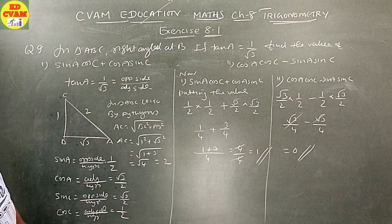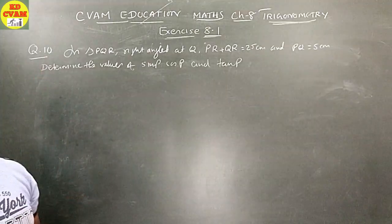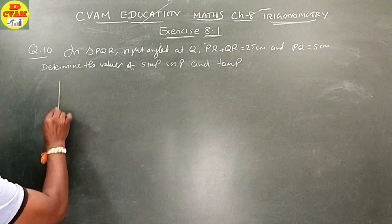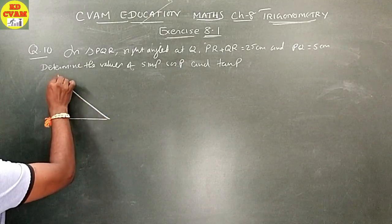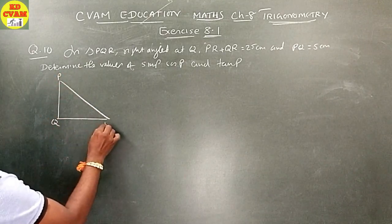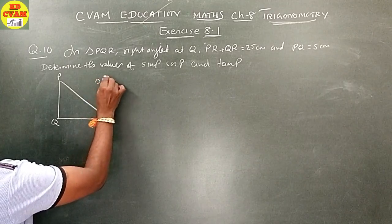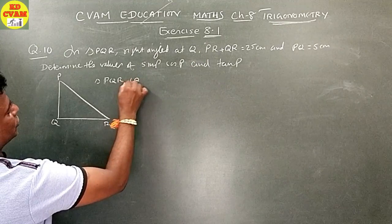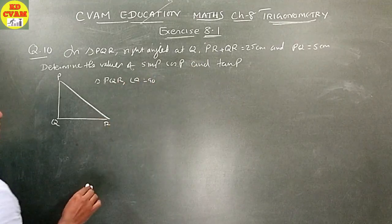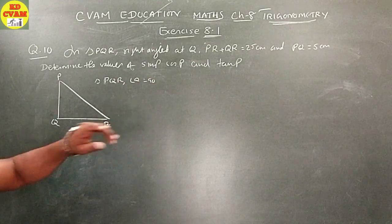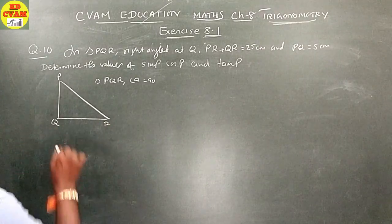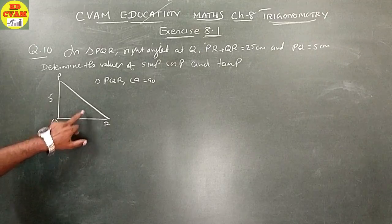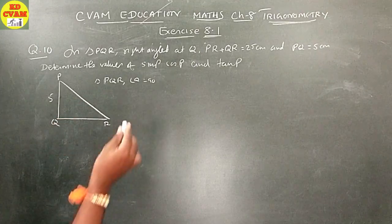I hope you understood. Let's go to the next sum. Question number 10: in triangle PQR, right angle at Q. PQ is equal to 5 cm. PR and QR are given such that PR plus QR equals 25. Let PR equal X, so QR equals 25 minus X.